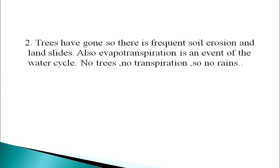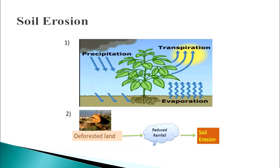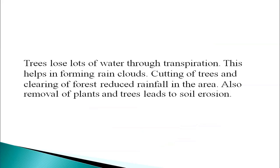Roots of the trees hold the soil in place. With trees gone, there is frequent soil erosion and landslides. Also, evapotranspiration is an event of the water cycle. With no trees, there is no transpiration and so no rains. Trees lose lots of water through transpiration, which helps in forming rain clouds. Cutting of trees and clearing of forests reduces rainfall in the area. Also, removal of plants and trees leads to soil erosion.